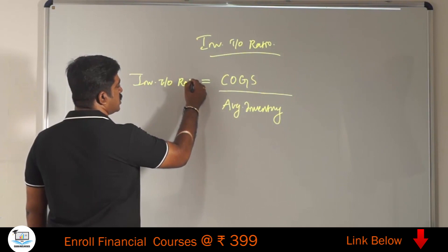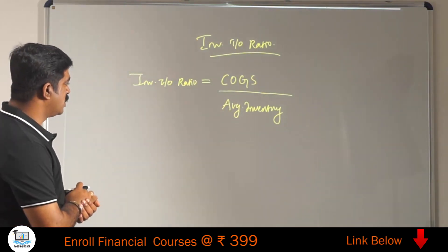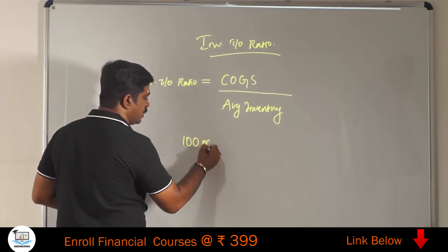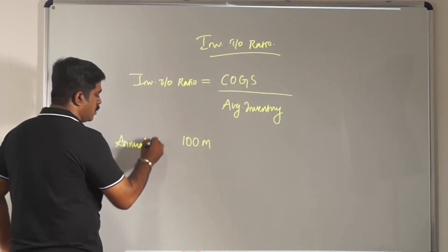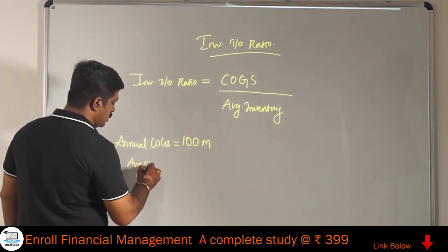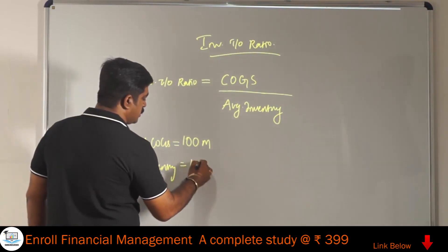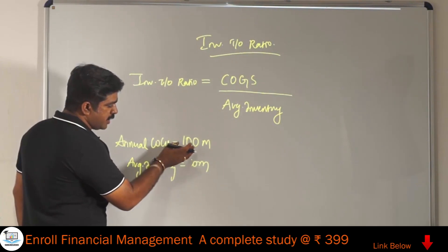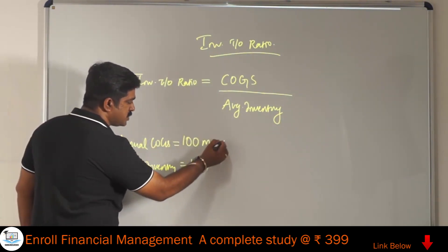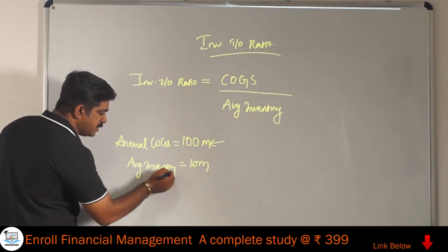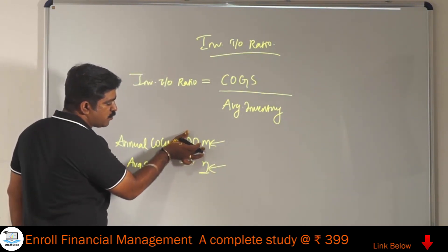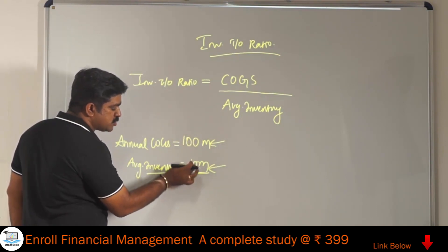Now, what does this ratio communicate? To understand, let's say the cost of goods sold for a company is 100 million — that is the annual cost of goods sold. The company keeps an average inventory of, say, 10 million. So their annual cost of goods sold for one full year is 100 million, and in their inventory they have stock worth 10 million.